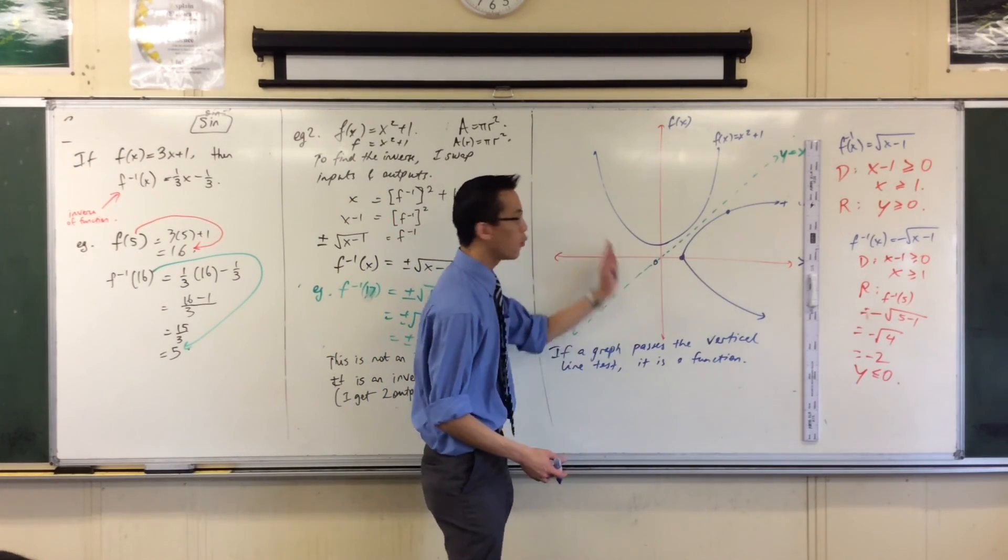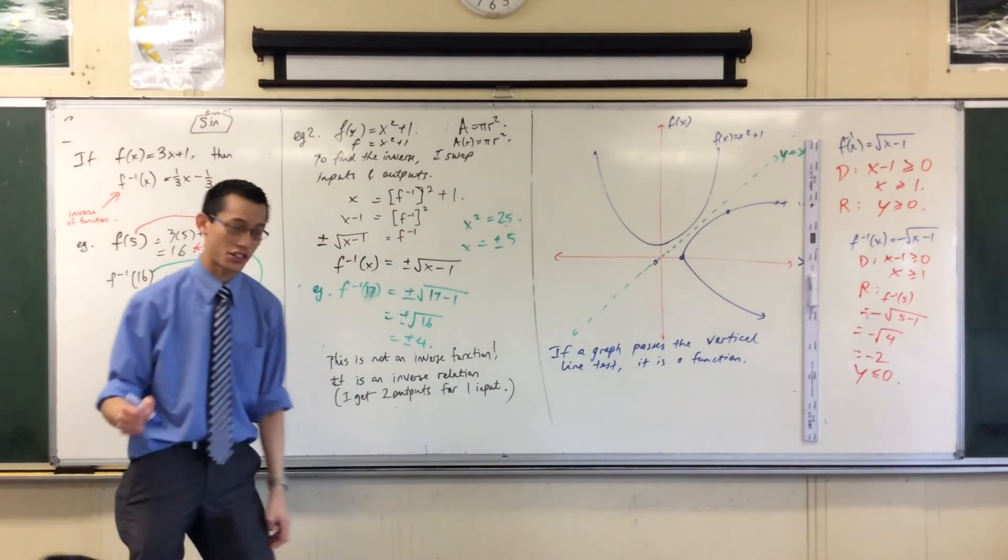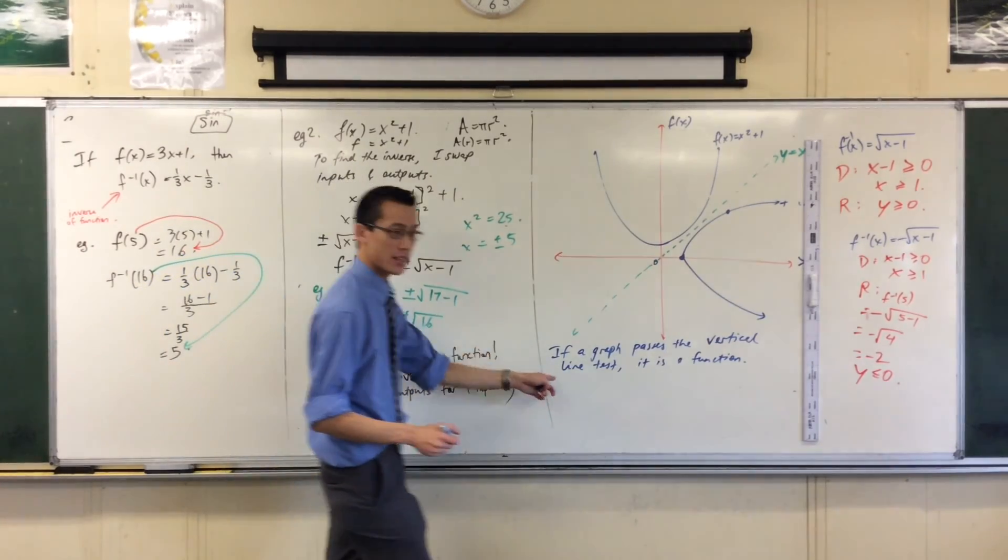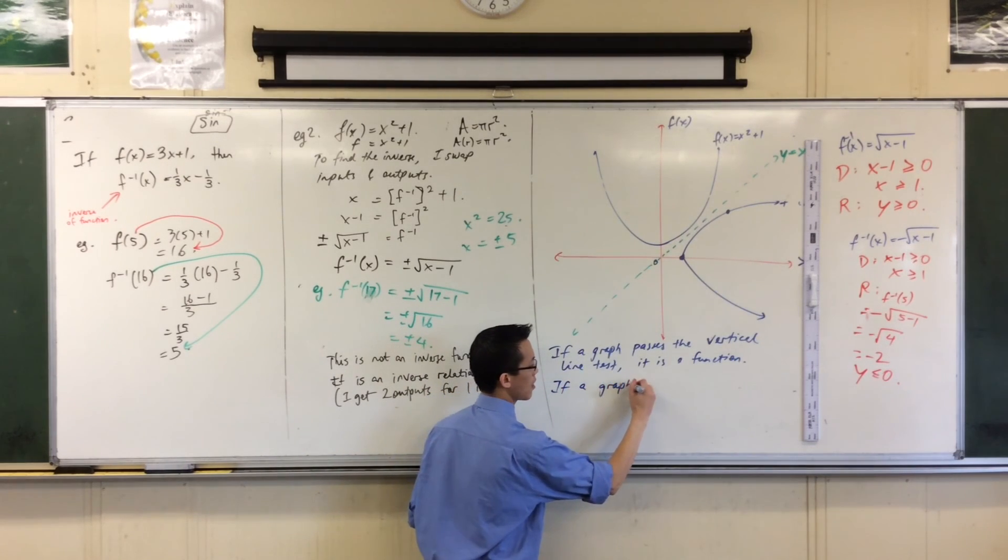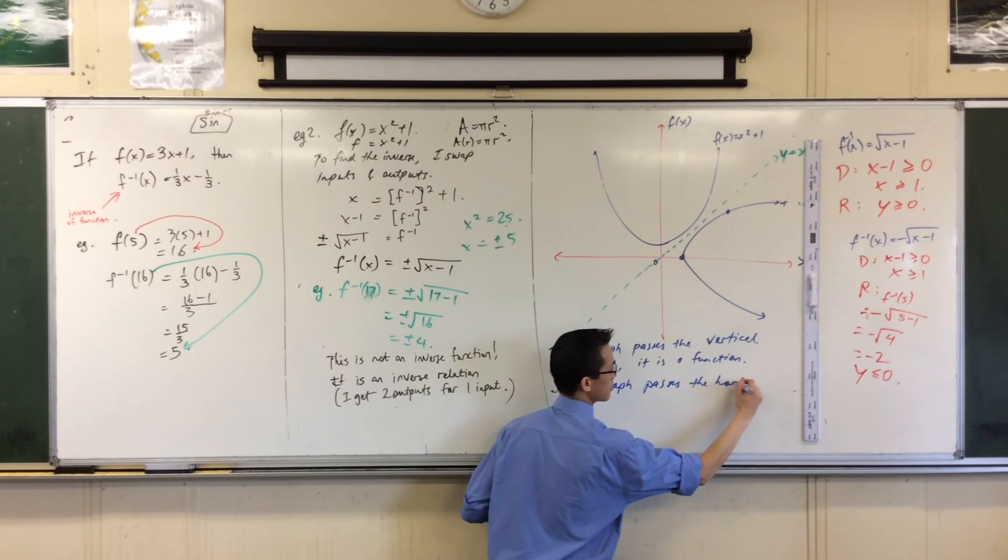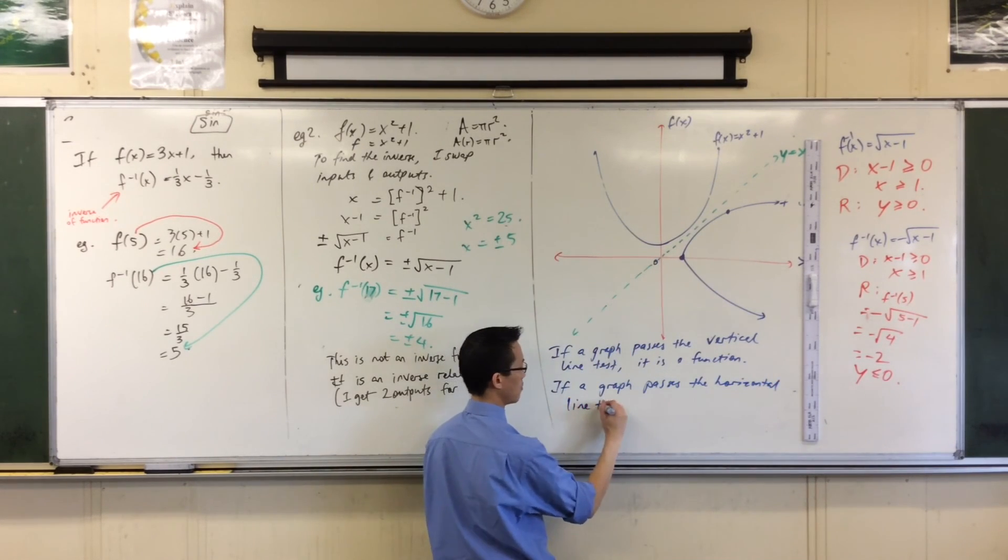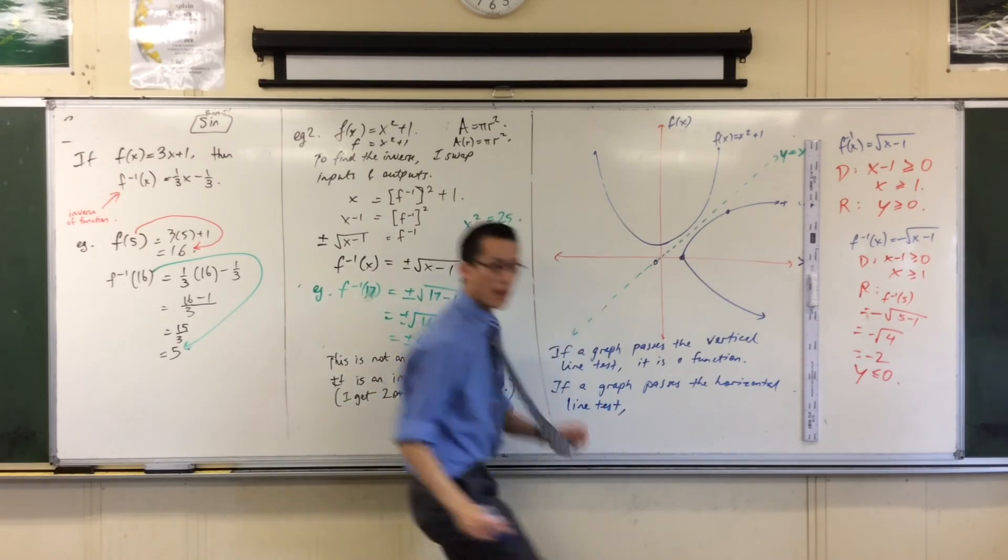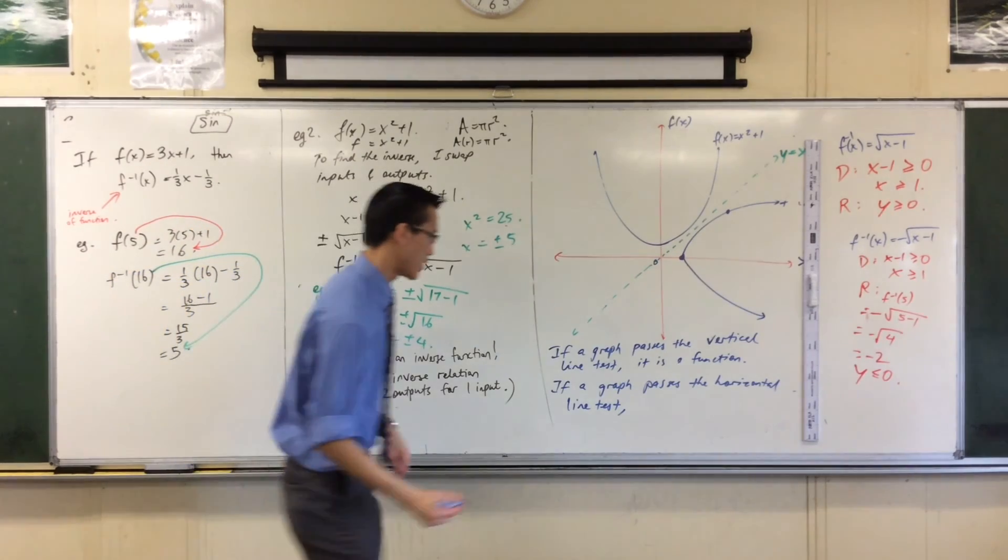But if I want to get an inverse, if I want to get an inverse, I don't want a vertical line to go through it. I want a horizontal line to go through it. So, this is what happens from the vertical line test. If a graph passes the horizontal line test, then it's not that it's a function necessarily, but it will have an inverse function.